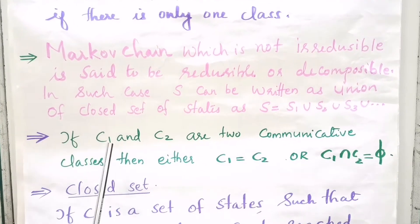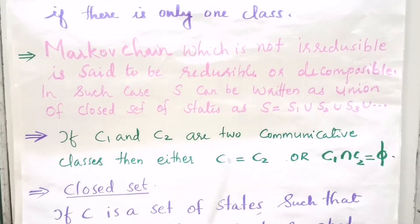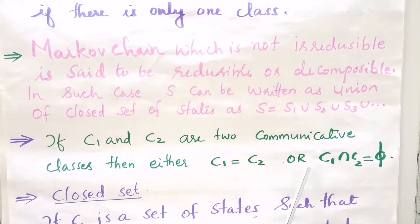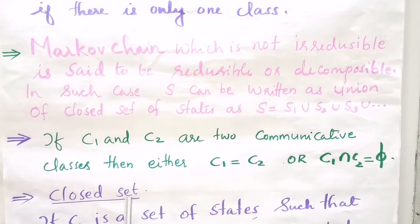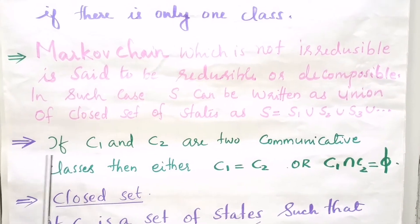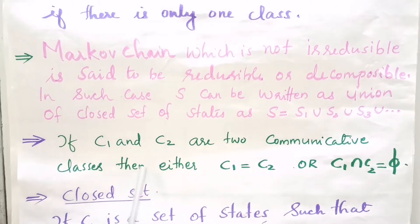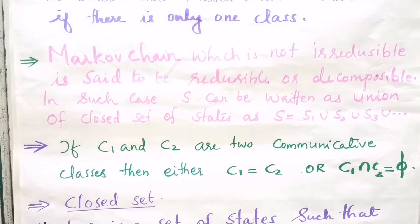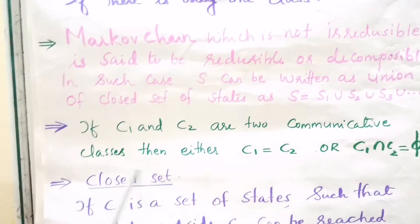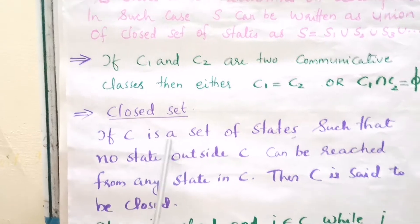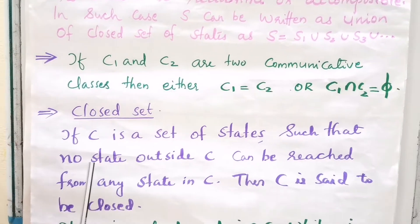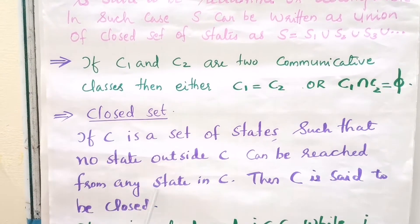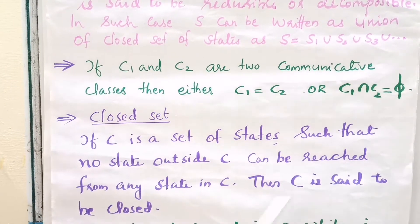If C1 and C2 are two communicating classes, then either C1 equals C2, or C1 intersection C2 equals the empty set. Next, we consider closed sets. If C is a set of states such that no state outside C can be reached from any state in C, then C is said to be closed.